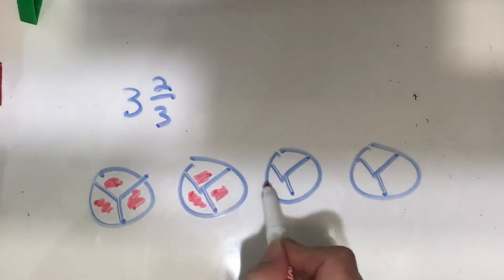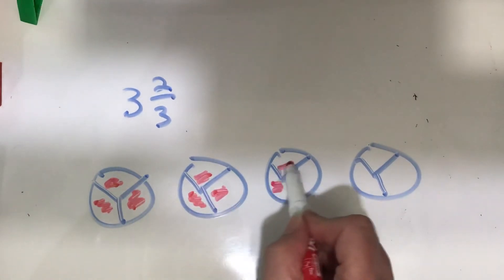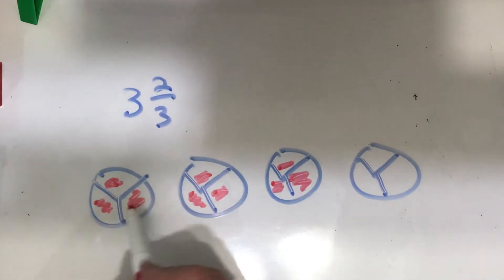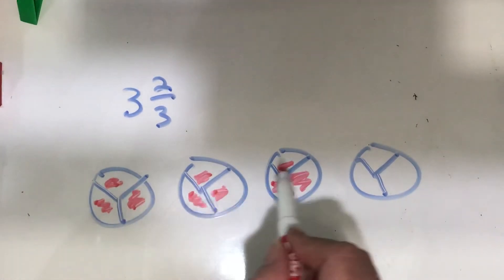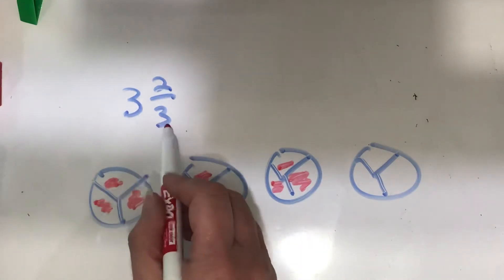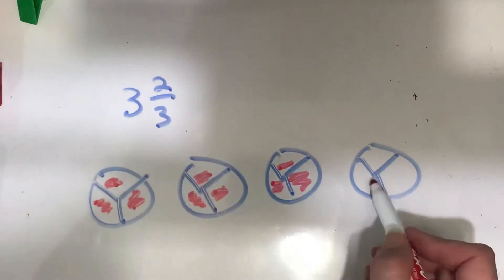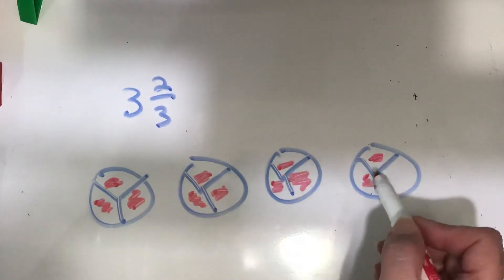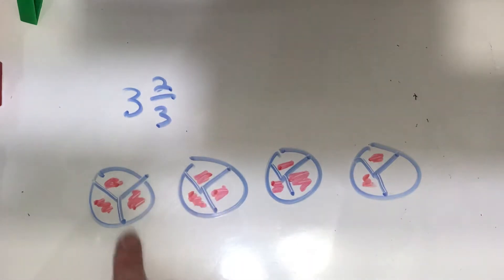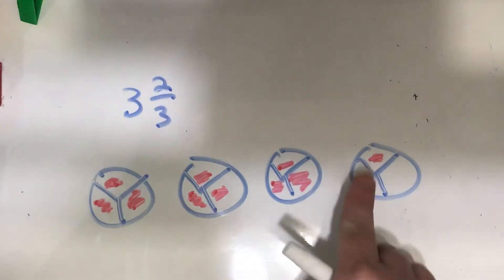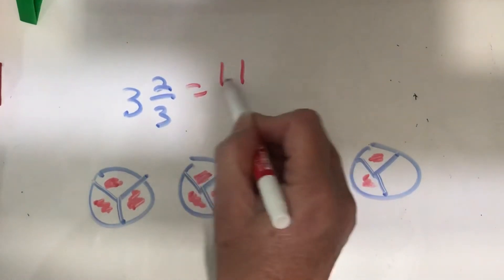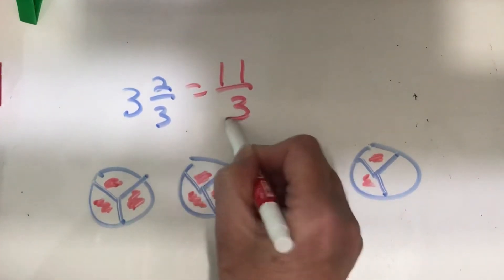So here are your three-thirds, six-thirds, nine-thirds. Three times three is nine, plus two more here. That would make eleven. So three, six, nine, ten, eleven. So this equals eleven-thirds.